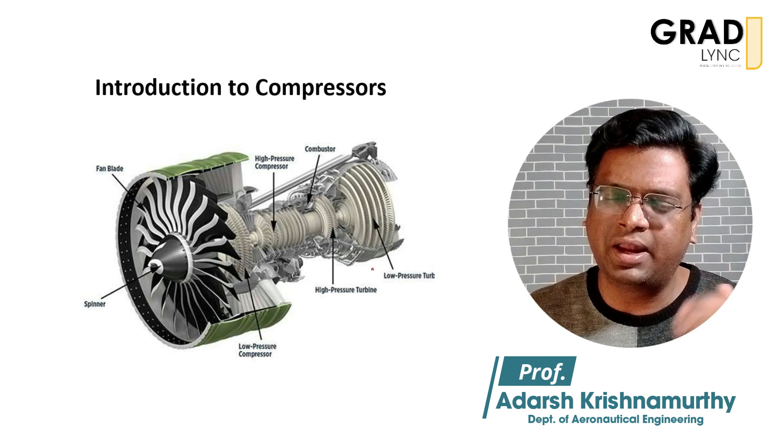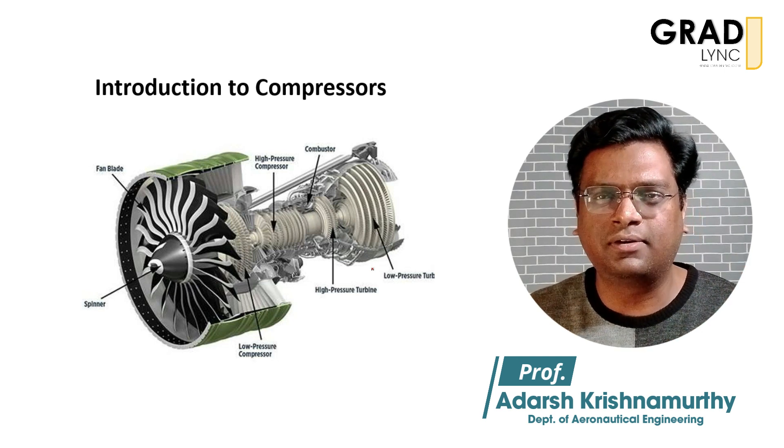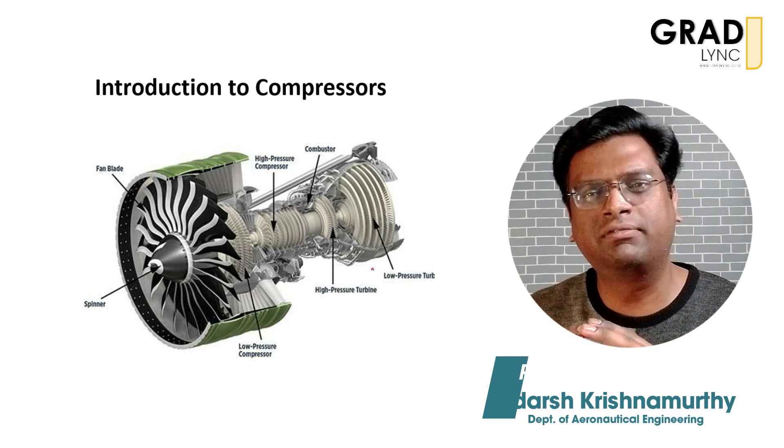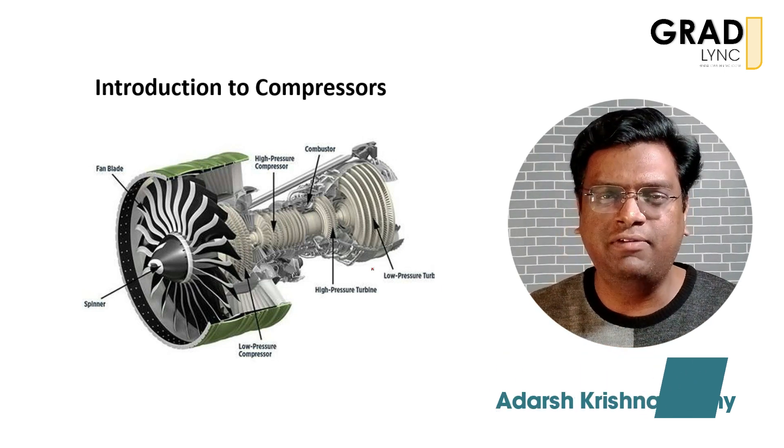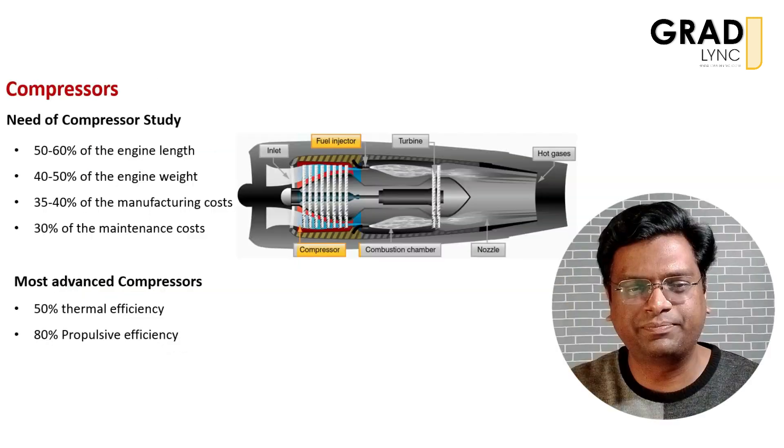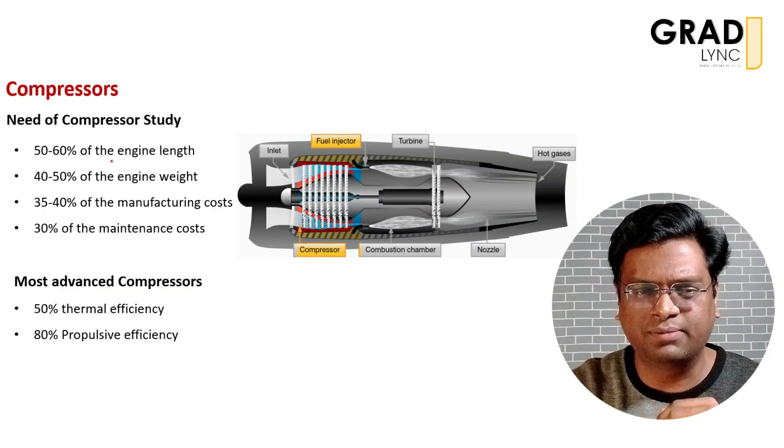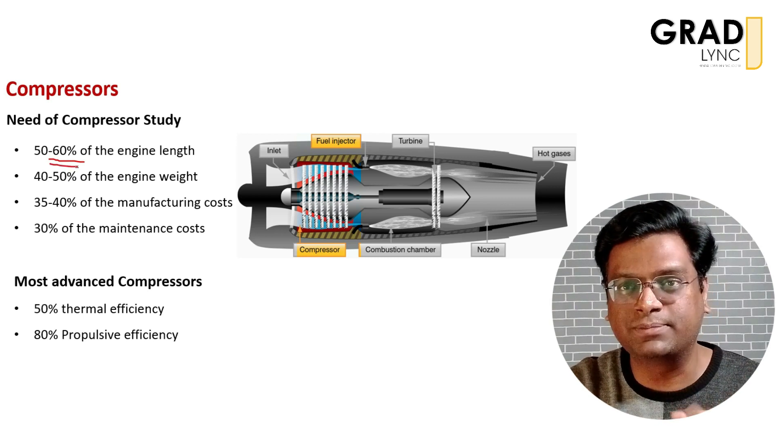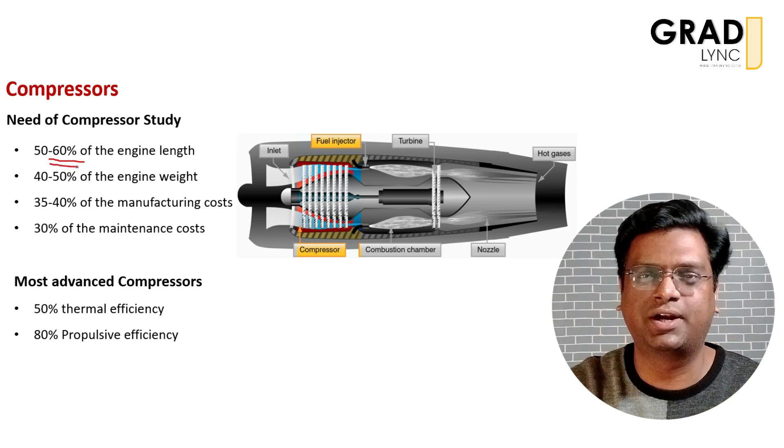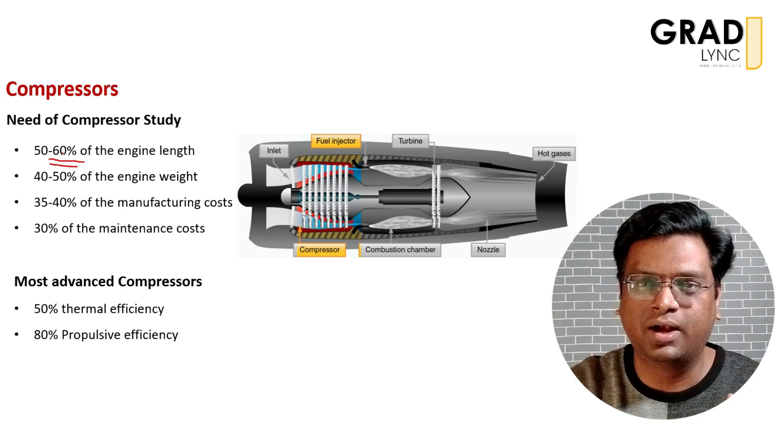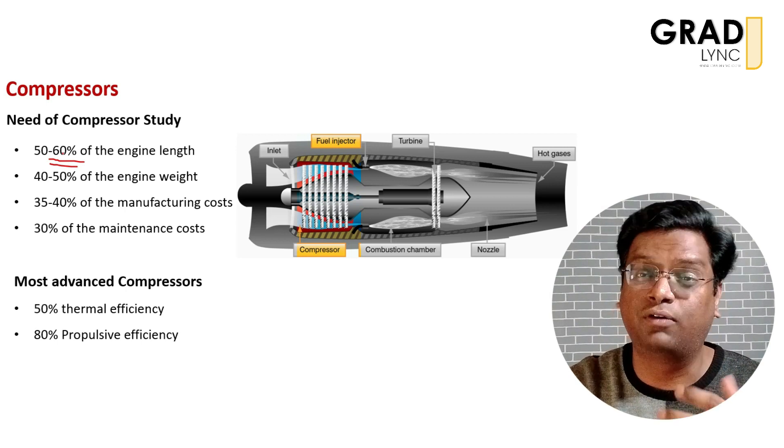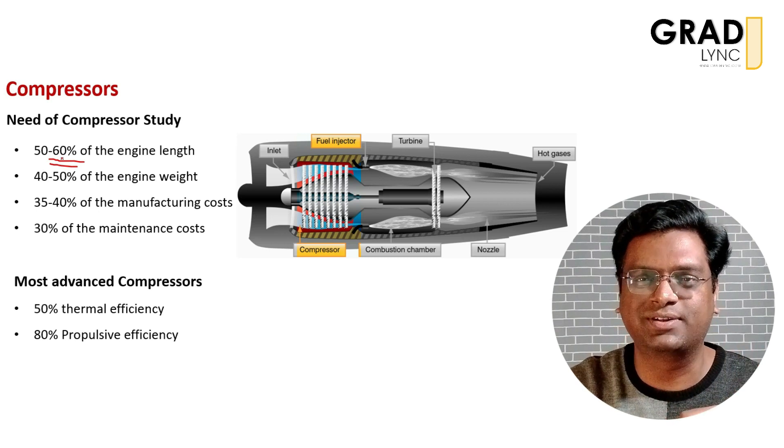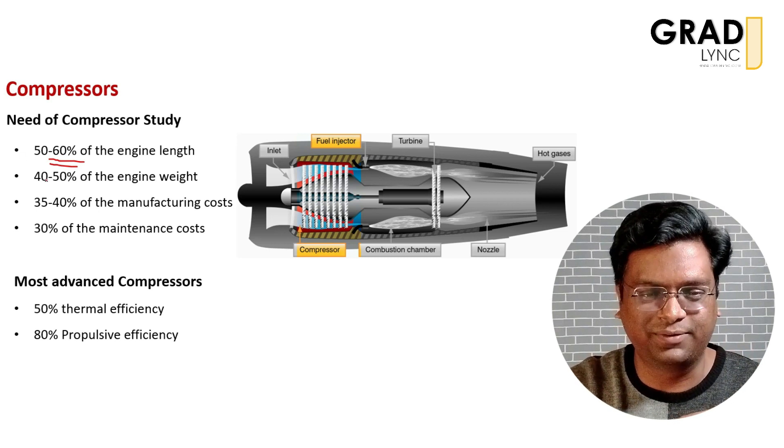We will go in depth into the analysis of the compressor blade soon, but before that we will try to understand why we have to study compressors. The first point is the length. The length of the axial flow compressor in a typical jet engine varies between 50 to 60 percent of the overall engine length, which is a very significant part.